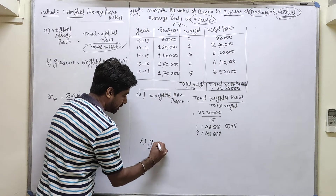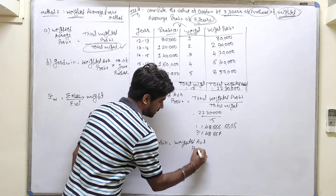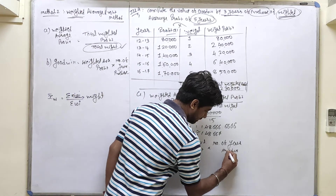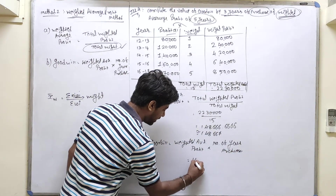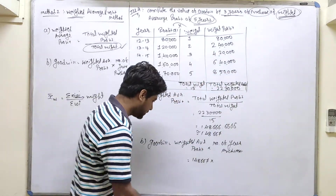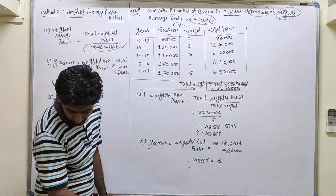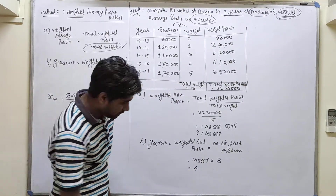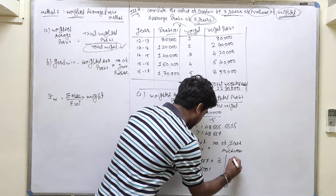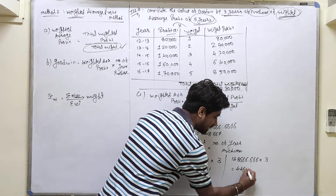Secondly, we find out goodwill. Goodwill equals weighted average profit multiplied by number of years of purchase. Our weighted average profit is 1,48,667 and the number of years of purchase given is 3. So goodwill = 1,48,667 × 3 = 4,46,001. If you use the decimal figure 1,48,666.66 × 3, you get 4,46,000 — that is the perfect figure. The difference of only one rupee doesn't matter.